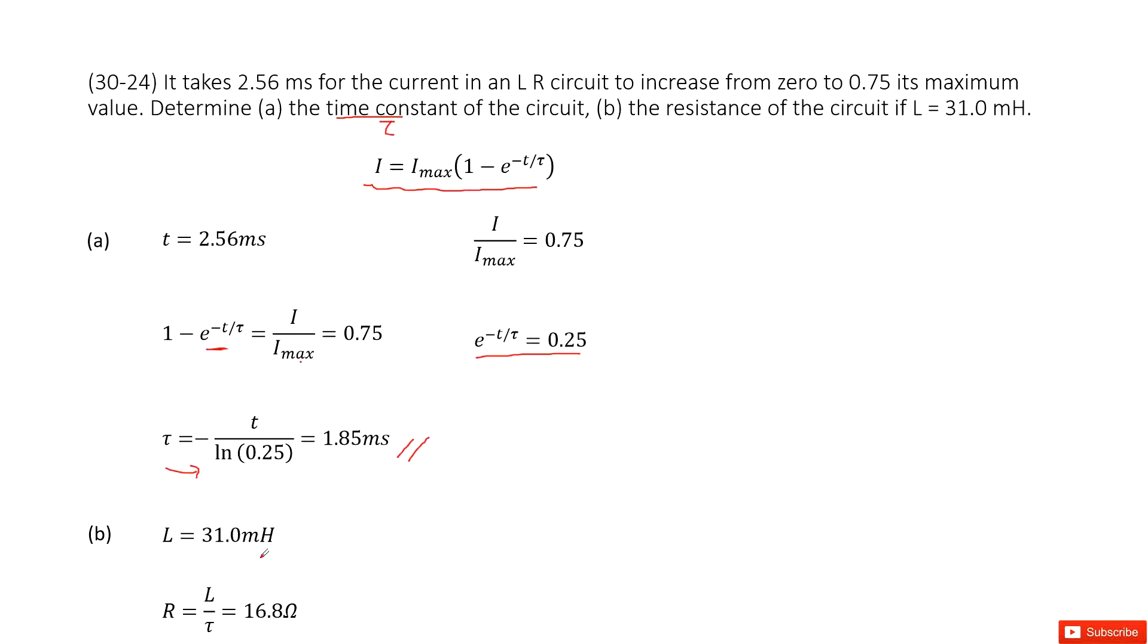Very straightforward. We use R equals L over tau. We know L and tau, so we input these two quantities to get the final answer.